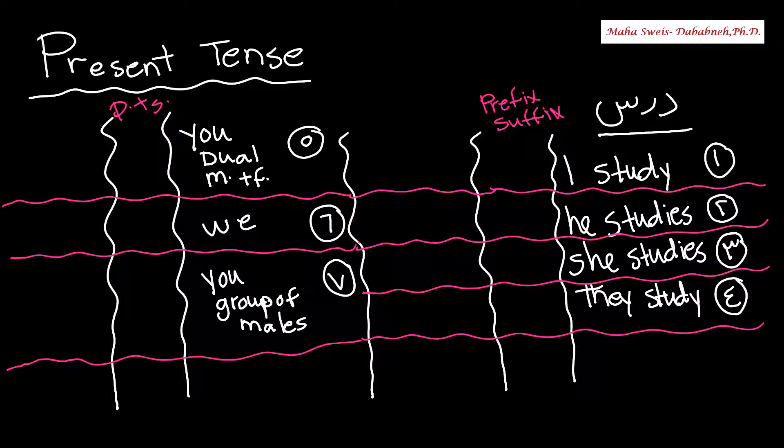Now let's implement what we have learned in my previous video about present tense conjugation. So you have one example here, the verb daras. I want you to do it with seven pronouns. Previously we have learned 13 pronouns. I picked 7 out of 13.